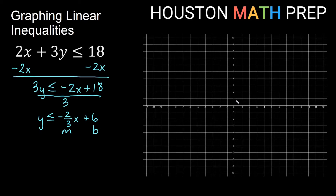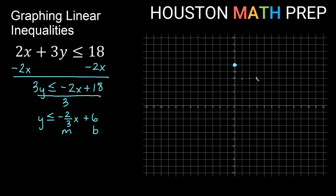Using our y-intercept, we go up 6 and plot that point. Then using the slope, the rise is negative 2, so we go down 2 and right 3 to get another point. From the intercept going down 2 and over 3 gives a point at 3 comma 4. Now with our two points, we can sketch the line through those points.